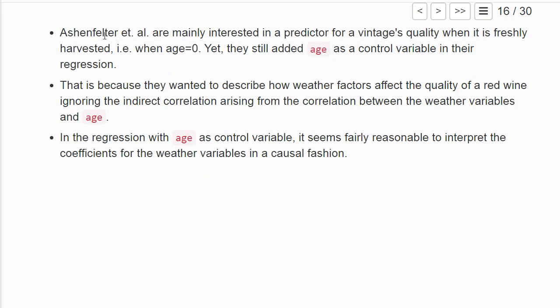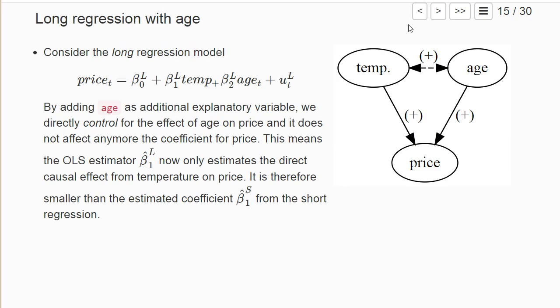The main interest of Ashenfelter was that he wanted to have a predictor for a vintage's quality when it was freshly harvested, when its age was zero. Nevertheless, he added h as a control variable in the regression because they wanted to find the cause and effect of the weather variables and control for this indirect correlation that arose because older vintages had higher growing temperatures in the dataset.